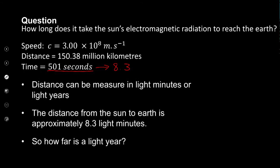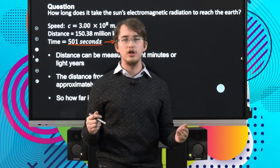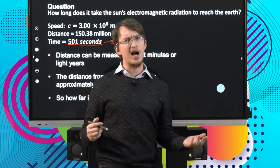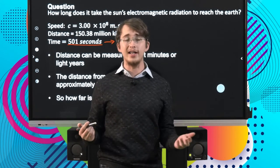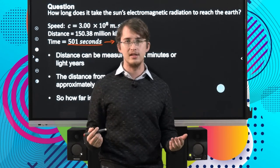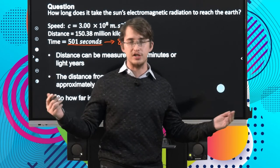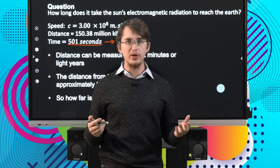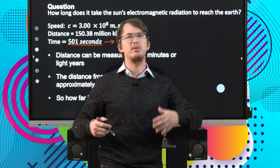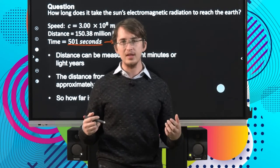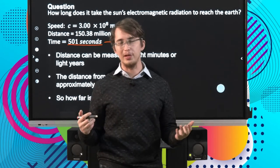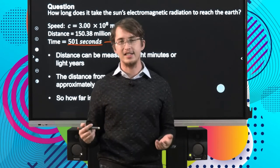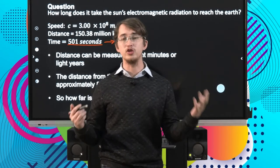A term you may have heard used more in physics is perhaps a light year. When people talk about light years in movies, do they usually refer to a period of time or a distance? If the movie was made by someone who understands science, light year will be used correctly to describe a very large distance — the distance that light would travel in a single year. If they're not very clued up on science, they tend to use the term light year to describe an amount of time, which it is not.